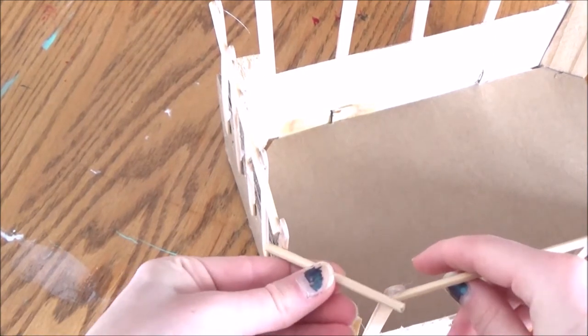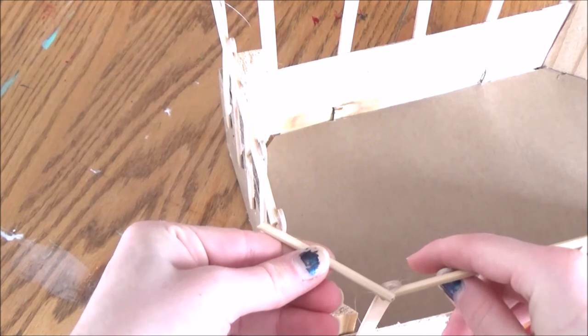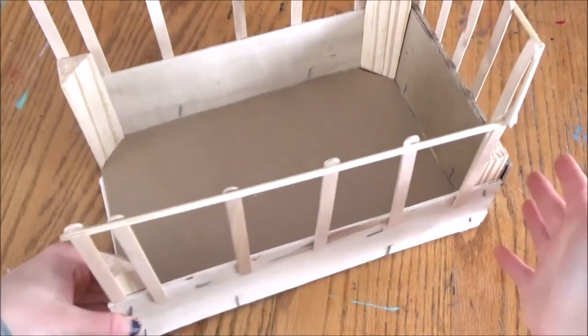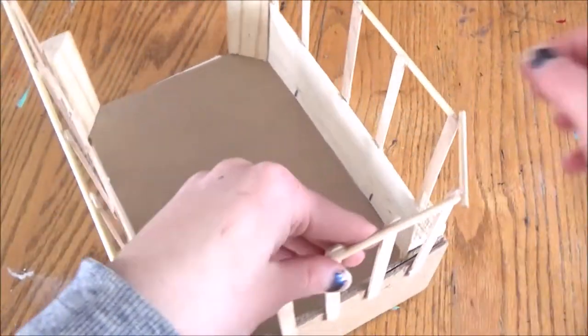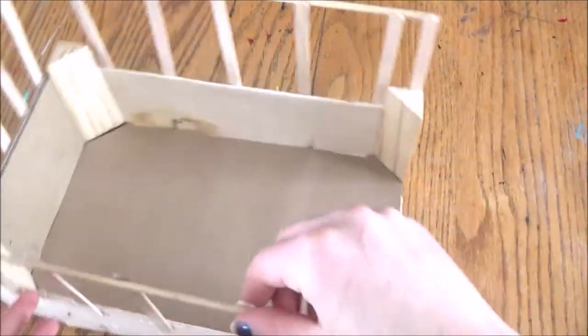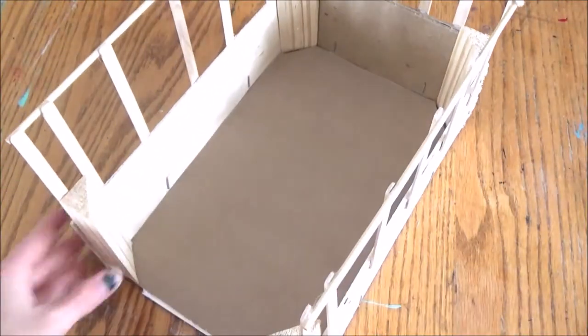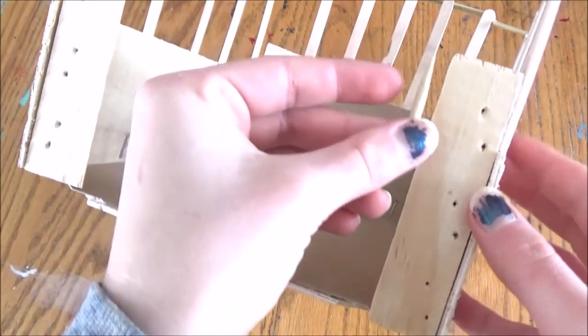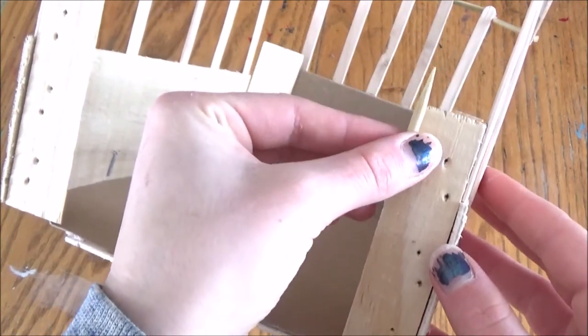Then you're going to glue a shorter one on the back and then one on each of the corner pieces like this. So this is what the stall should look like now. Next you're going to glue a smaller piece of a wooden dowel or skewer to the front.